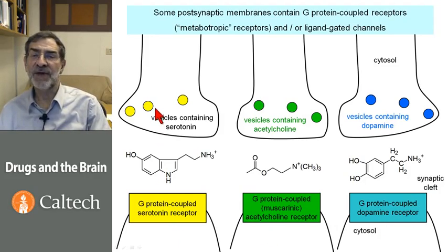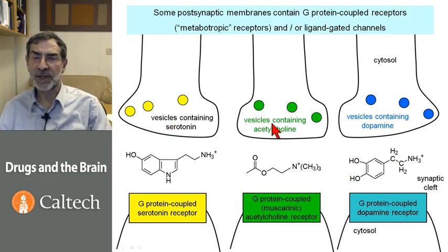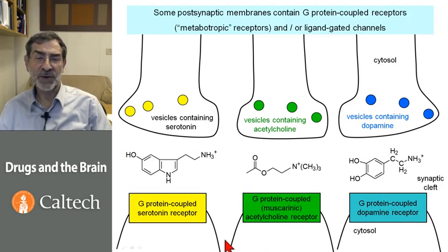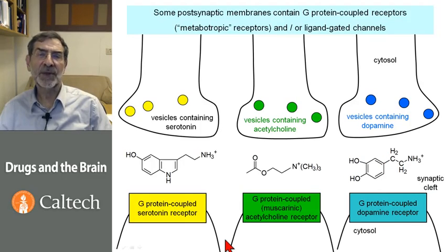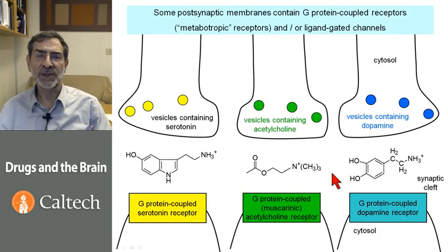These receptors are on the receiving end of synapses. We have a presynaptic terminal containing serotonin, one containing acetylcholine, one containing dopamine, and these are diffusing to activate their G-protein coupled receptors. This is synaptic transmission, but as we will see, it's a bit slower and more diffuse than the little chemical hop we've described until now.